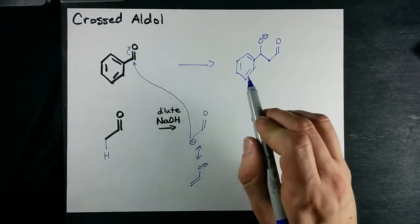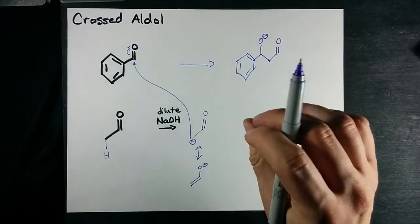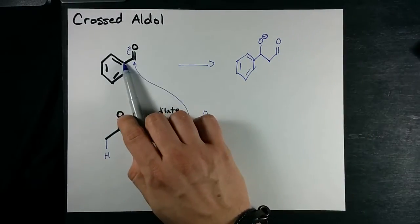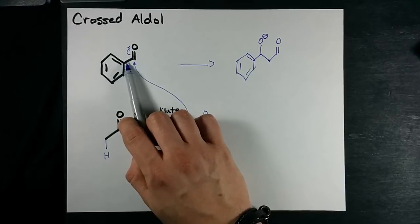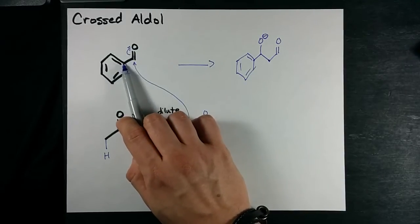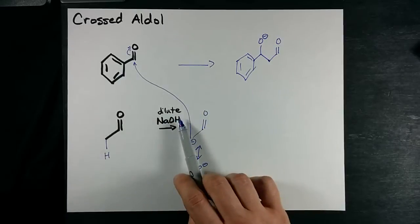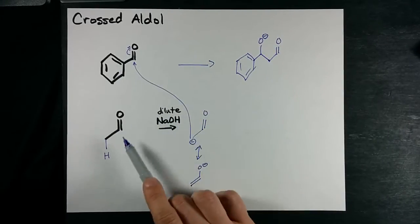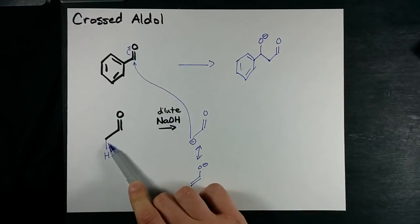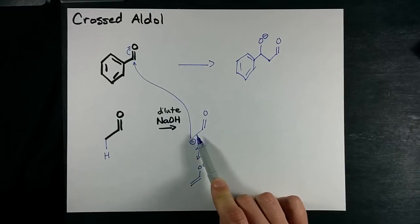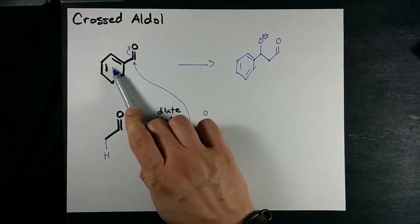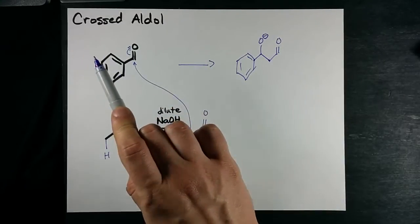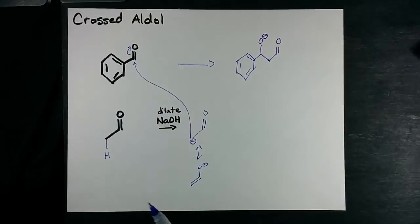Hey, we've already got the aldol condensation product, but the key was we started with only the aldehyde with no alpha protons in abundant supply and NaOH. No reaction between those two, and as soon as we add this guy, he will get deprotonated and attack one of these only because they're in such higher abundance than these guys.